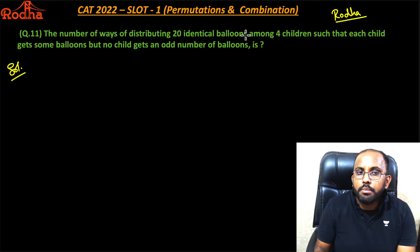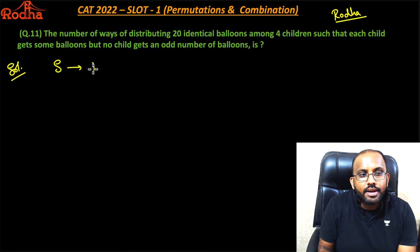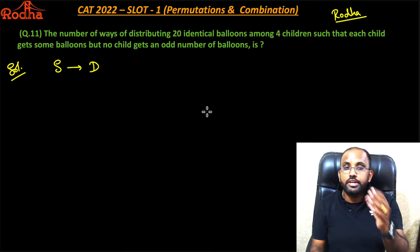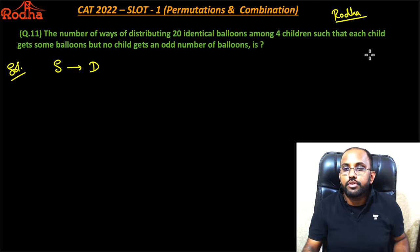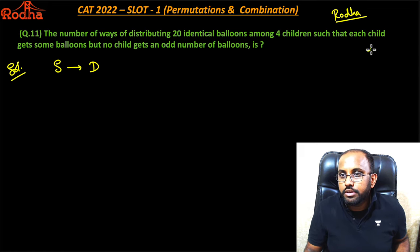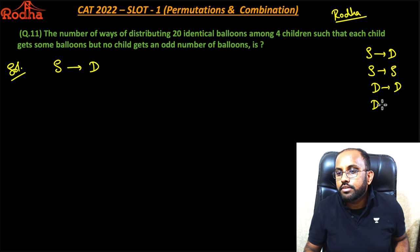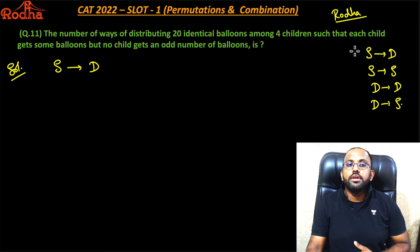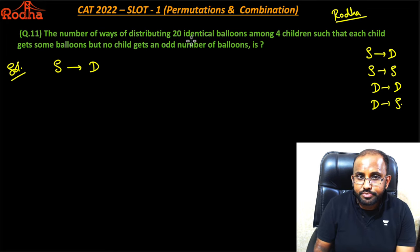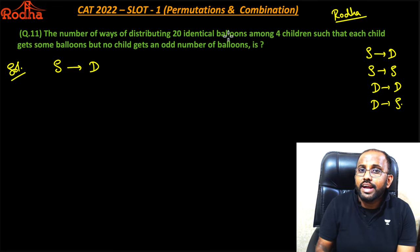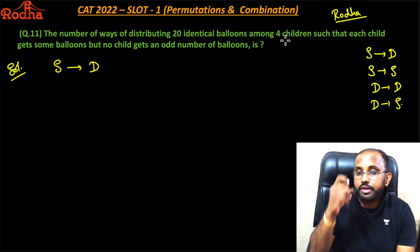So this is a category of question from S2D — that is Similar to Different. We have studied four types of distribution: S2D, S2S, D2D, and D2S. Here it is 20 identical balloons among four children.